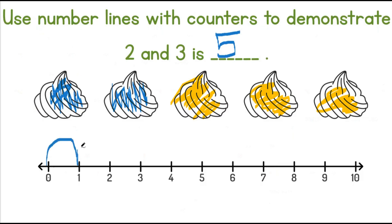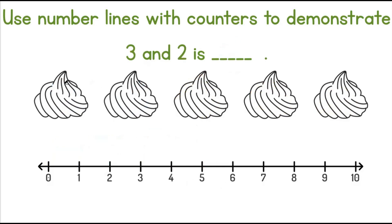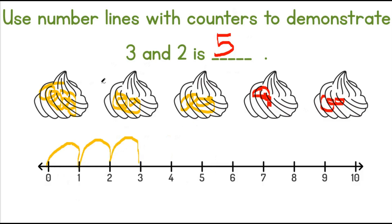We have 3 yellow and 2 red, and that will give us the number 5. 1, 2, 3 yellow and 1, 2 red will give us the number 5.